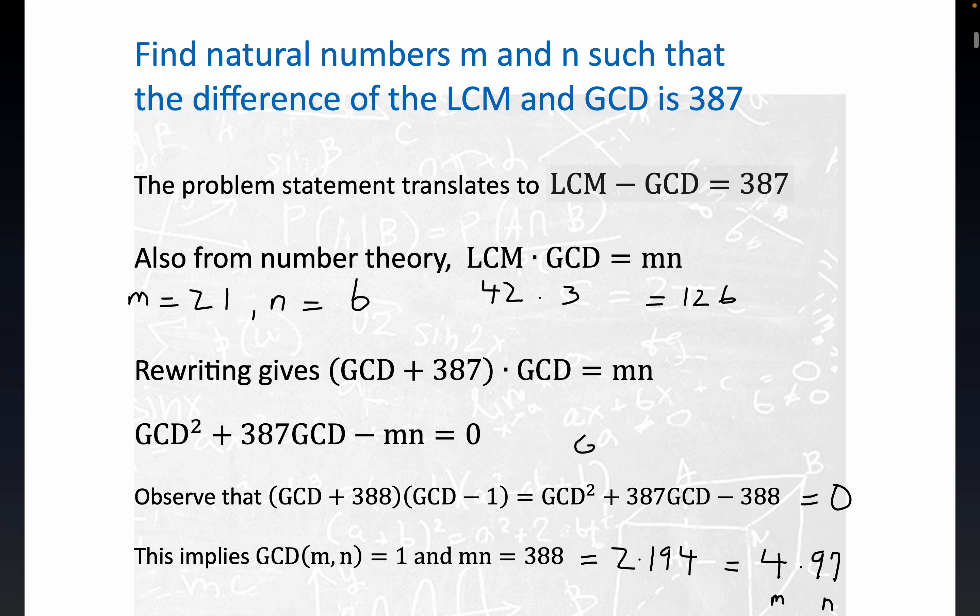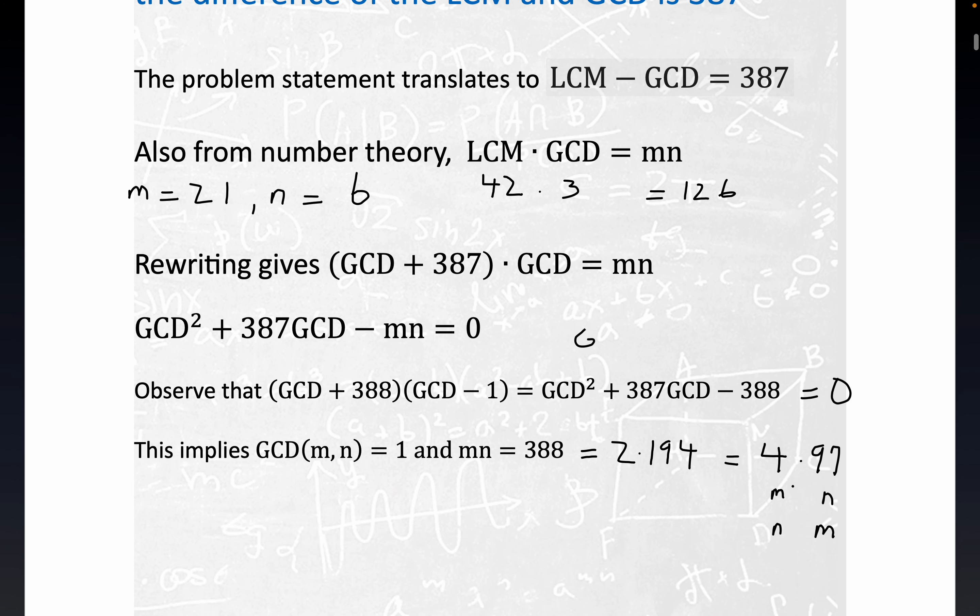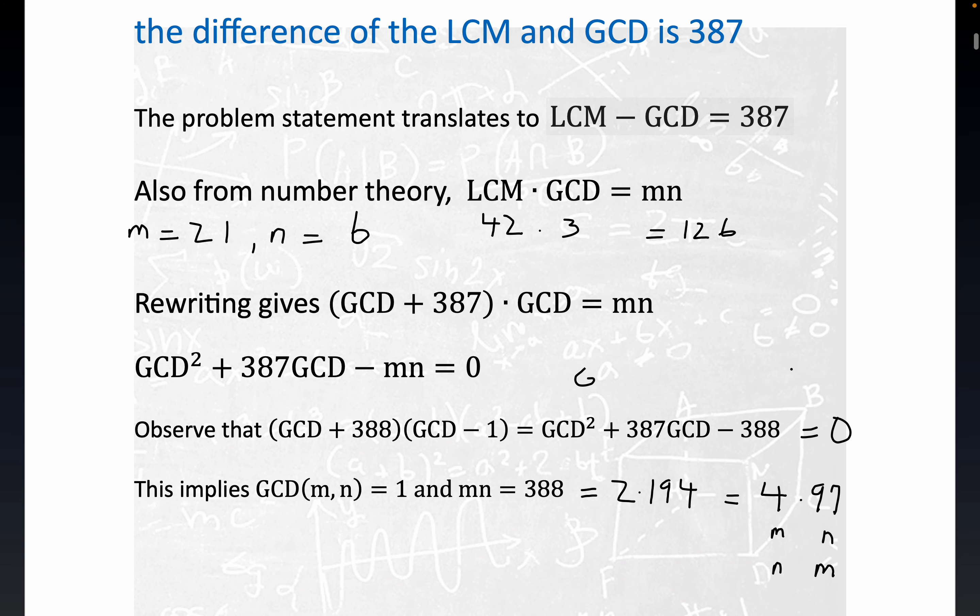If you go back up here, the LCM of these two numbers in either order would be 4 times 97, which is 388. And the GCD is forced to be 1 in the case we considered. So 388 minus 1 equals 387. Four times 97, 2 times 194 is 388, and so is 4 times 97, it's just a difference in the factorization. But for this choice, the GCD is 1.